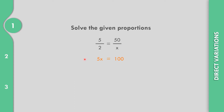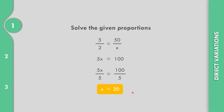Afterwards, let us solve for the value of x. Let us divide both sides with positive 5, so that becomes 5x divided by 5 and 100 divided by 5. Cancel 5 and 5. So x equals 100 divided by 5, that is equal to 20. So, x equals 20.